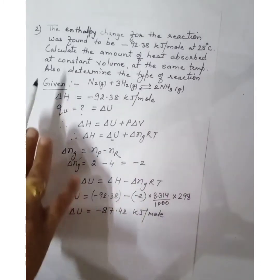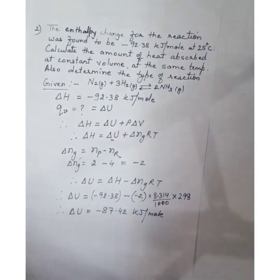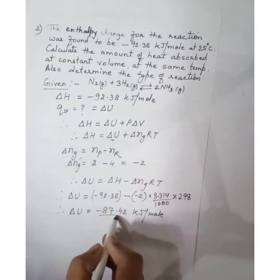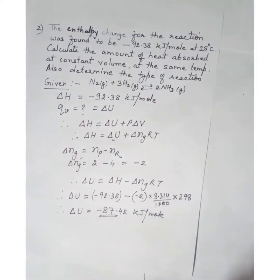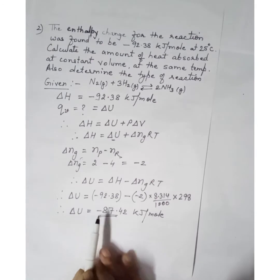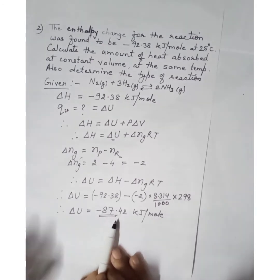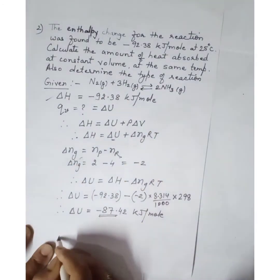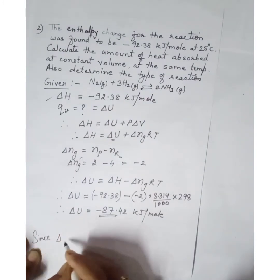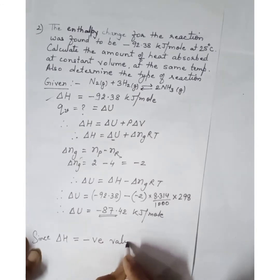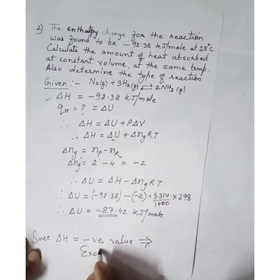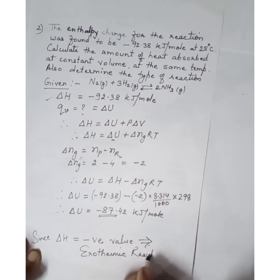We have calculated delta U as minus 87.42 kilojoule per mole. The question also asks to determine the type of reaction. Since delta H has a negative value, we can say an exothermic reaction takes place.